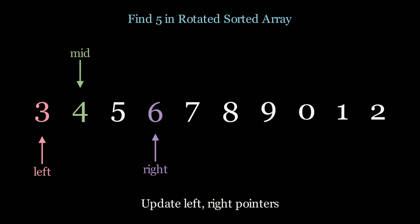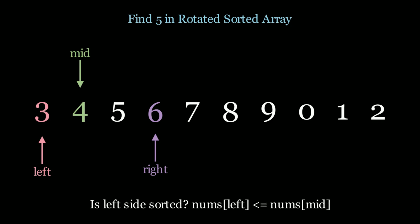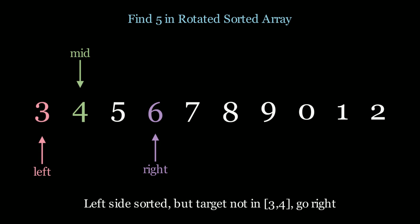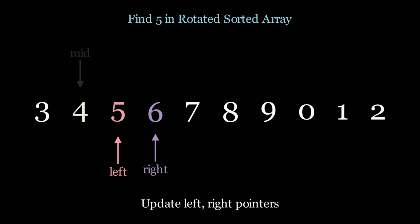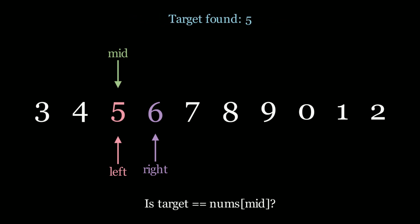We calculate another mid pointer — in this case it's 4. Is 4 equal to 5? No. Is the left side sorted? Yes, 3 is less than or equal to 4. However, is our target value contained inside that sorted array? No — 5 is not within the bounds of 3 to 4. So we know for sure we cannot find our answer on the left side. Our only other choice is to go right. We move the left pointer to the right portion of the subarray. We calculate mid again, and we find that it's 5. The target equals 5, so we found our target. This was case number 1 — finding 5 in this rotated sorted array.